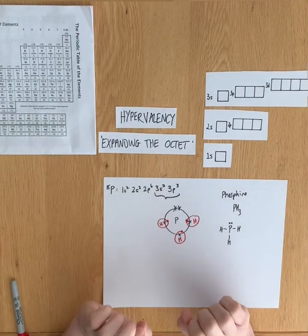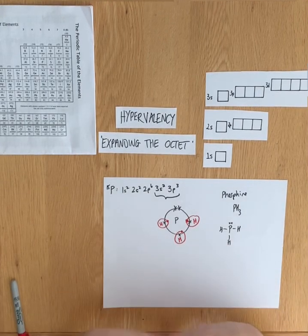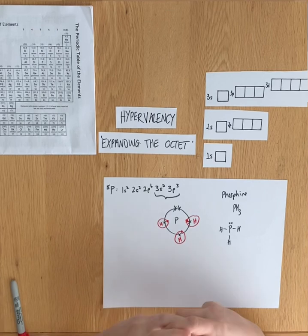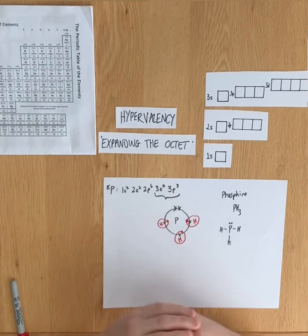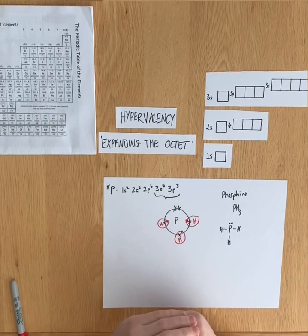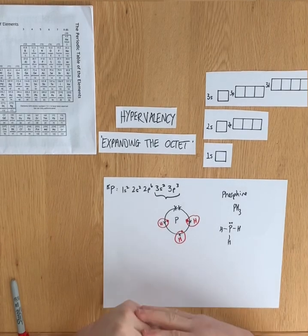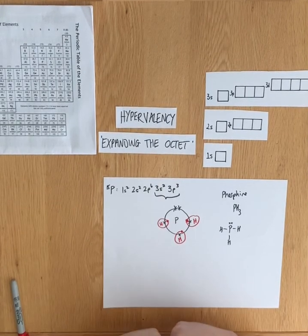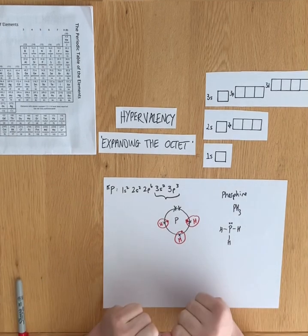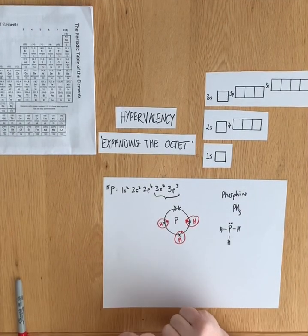Now, some more reactive elements—elements that are highly reactive and really want to share electrons with other atoms—can force elements like phosphorus to expand their octet, to have more than eight electrons in the outer shell.